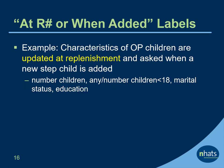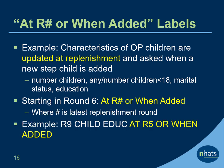There are also a set of variables for children of NHATS sample persons that are updated at replenishment or asked for the first time when a stepchild is added. Labels have not always been used consistently, but generally starting in round 6, you will see 'at round number' or 'when added' at the end of these variables, where the round number is the latest replenishment round. For example, the round 9 child education variable is labeled 'at round 5 or when added.'